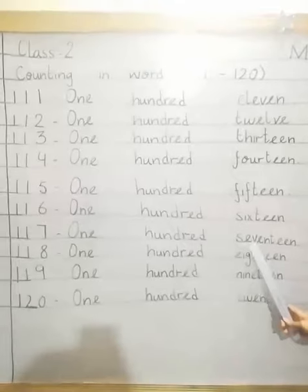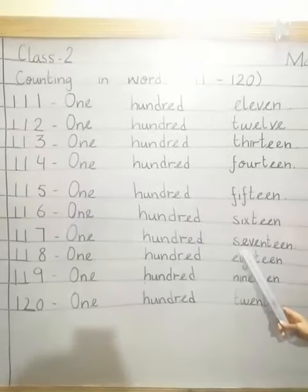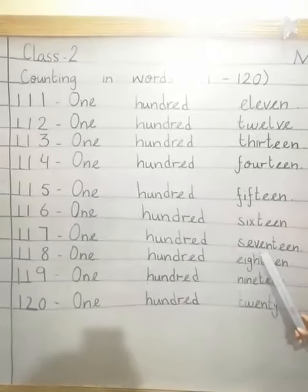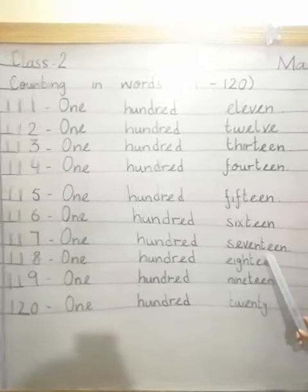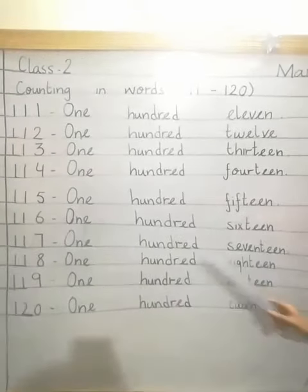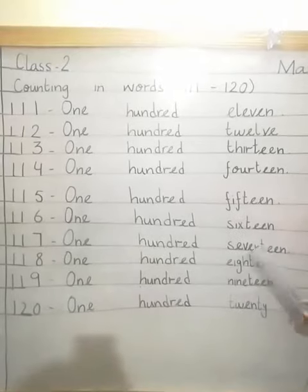117. What is the spelling of 17? S-E-V-E-N-T-E-E-N. 17. 117.